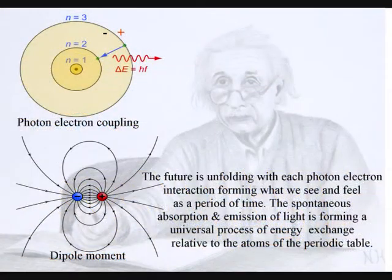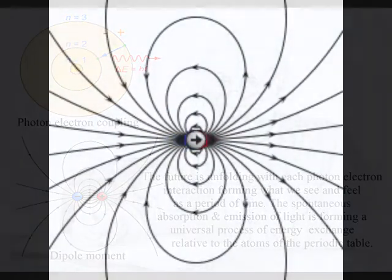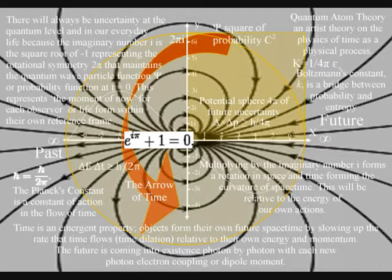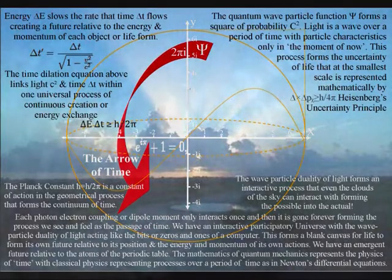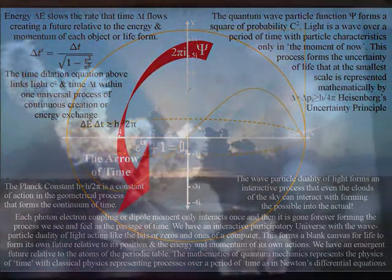When electromagnetic radiation or light interacts with an atom, it forms a photon-electron coupling or dipole moment with the movement of positive and negative charge. In this theory, this process represents a future unfolding photon by photon, with the wave-particle duality of light and matter in the form of electrons forming a blank canvas that we can interact with — forming the possible into the actual.